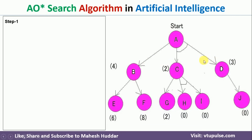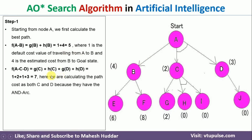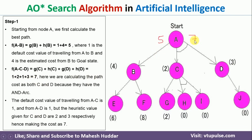We calculate f(A,B) = g(B) + h(B) = 1 + 4 = 5. Similarly, f(A,C,D) = g(C) + h(C) + g(D) + h(D) = 1 + 2 + 1 + 3 = 7. Between these two, 5 is the best option, so we select the path A→B.